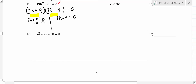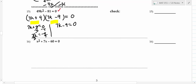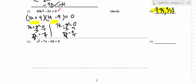You subtract nine from both sides to get 7k = -9, so one answer is negative nine-sevenths. The other one gives 7k = 9, and dividing by seven gives nine-sevenths. Write both in set-builder notation. It's all about factoring, and generally you're going to get two answers. There are times when you'll get the same answer twice.